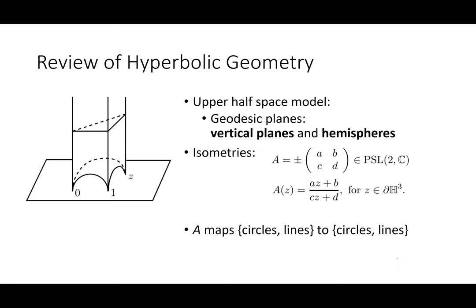Now we're going to turn this into something hyperbolic. Let me review a little hyperbolic geometry. We're looking at the upper half-space model today: H³ is the complex plane cross positive real numbers. The metric is a rescaled Euclidean metric where you rescale by the height. Today we'll talk about geodesic planes. The geodesic planes are hemispheres — their boundary at infinity is either a line or a circle on the extended complex plane, which is the boundary at infinity of hyperbolic three-space.